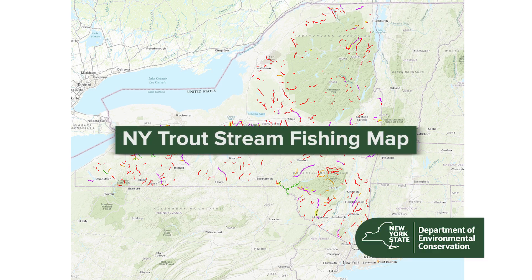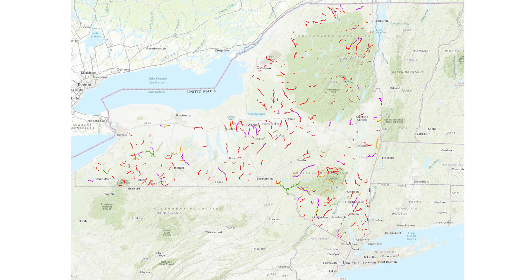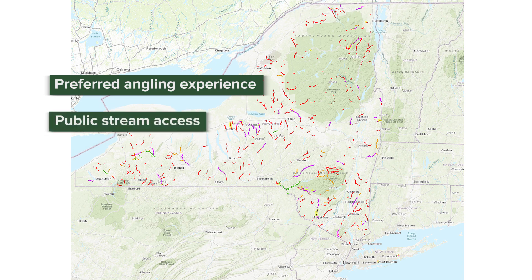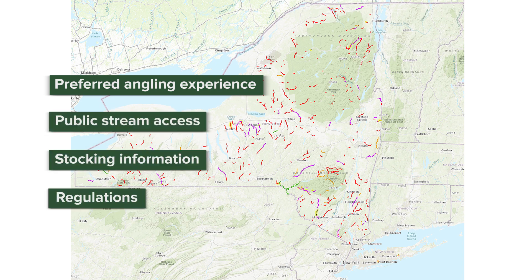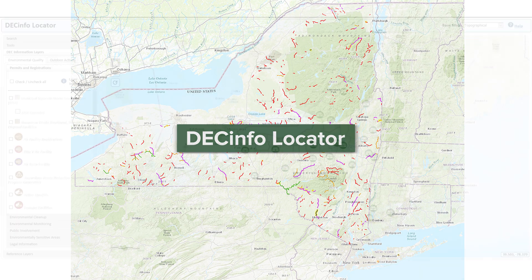The New York Trout Stream Fishing Map provides trout stream anglers with one-stop shopping to find the information necessary to plan their trips, including finding their preferred trout stream angling experience, public stream access, stocking information, and regulations. The map is made of several layers on DEC Info Locator, an interactive map that lets you access DEC documents and public data.